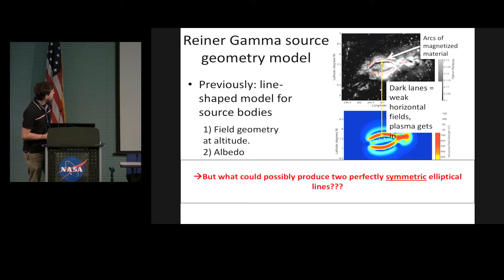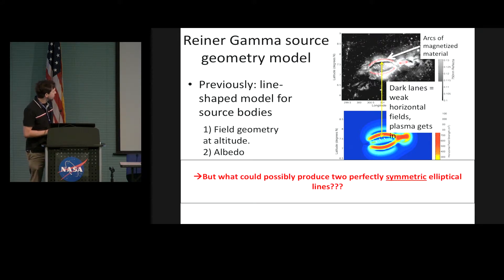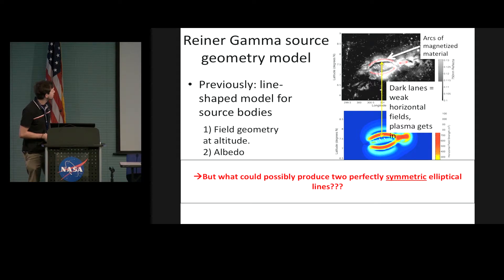That was a nice model to potentially explain what's happening. But in this talk I want to ask: what in the world could possibly produce symmetric elliptical lines of material? That's not something you see in nature very often — two elliptical, symmetric lines of anything, really.